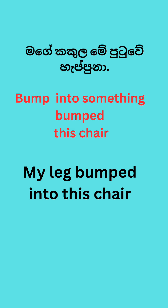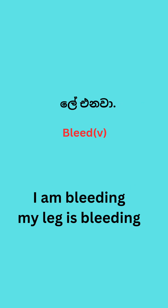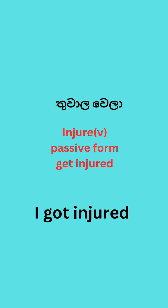I bump my leg against this chair. My leg is injured. To say my leg is called my blood — it is a passive form.